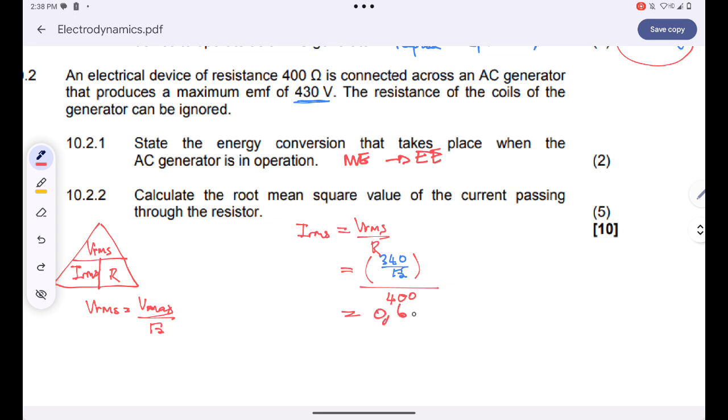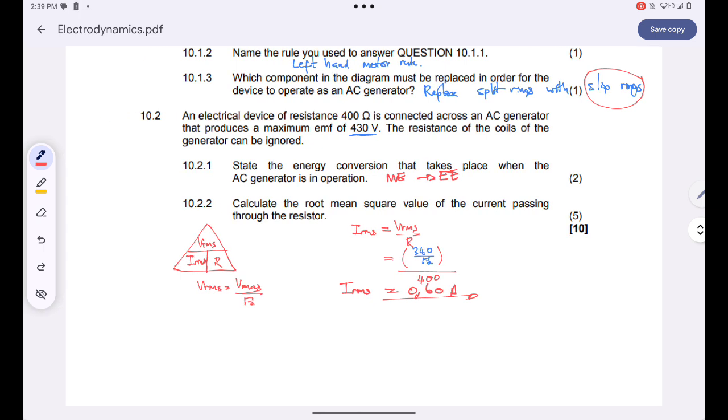This will simply give us a value of 0.601, 0.60 amperes. So the RMS current, our root mean square current, is basically 0.60 amperes. That's how we're supposed to tackle that question.